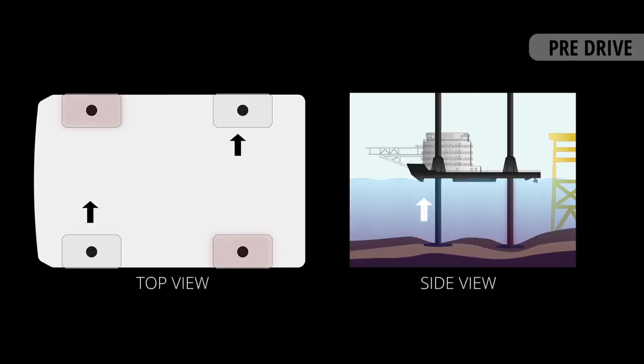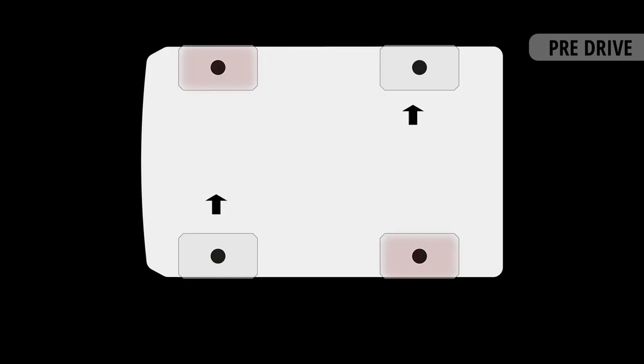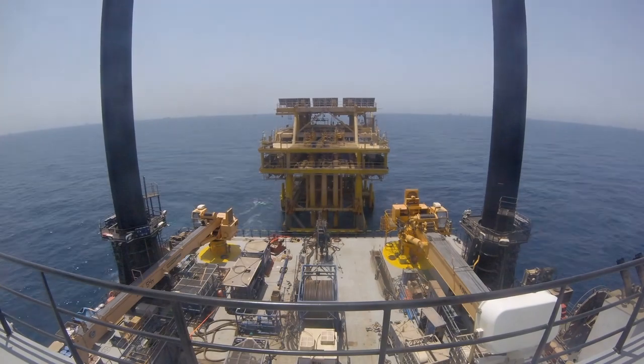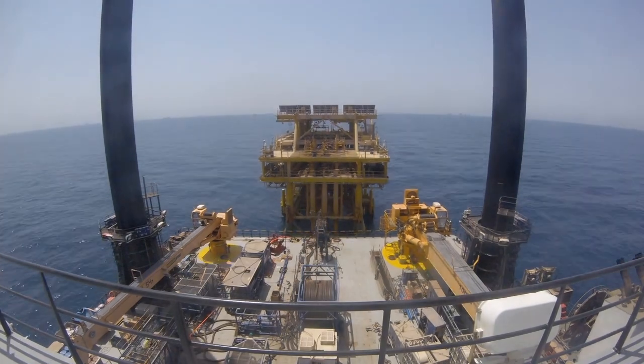Load is applied by raising a pair of diagonally opposite legs, which leaves all the weight on the two remaining legs. Each pair of diagonal legs will hold the weight for half an hour. That will ensure that the ground is able to sustain the weight of the barge. When no more penetration is observed, it is safe to elevate the hull out of the water.